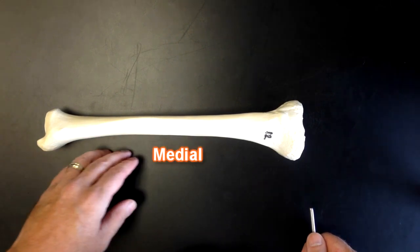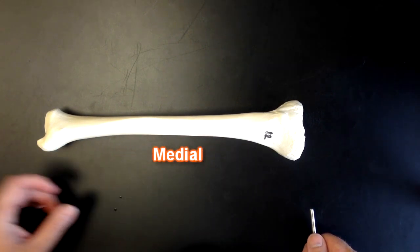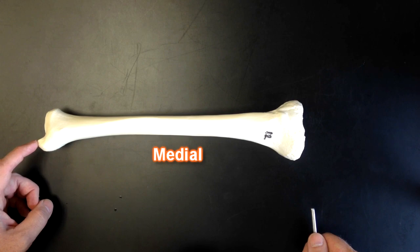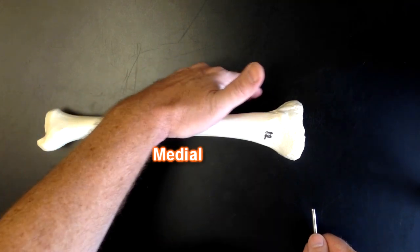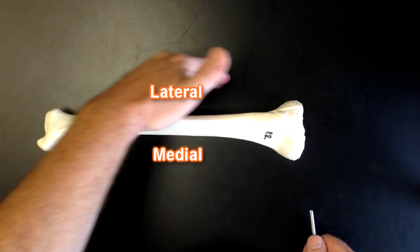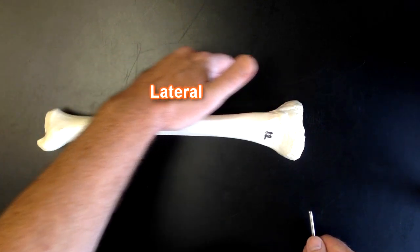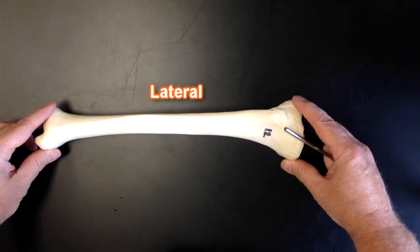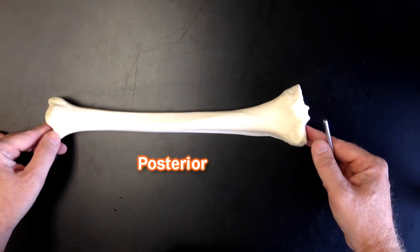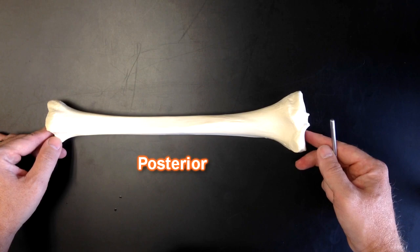This is the medial aspect of the tibia. This right here is the medial malleolus. The lateral aspect, where the fibula would be attached, would be over here. And then finally, the posterior surface of the tibia would be right here.